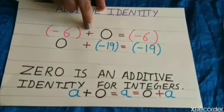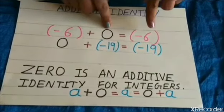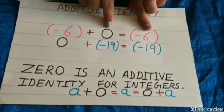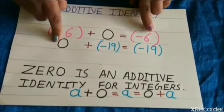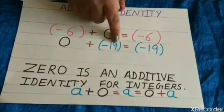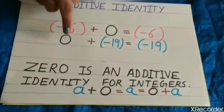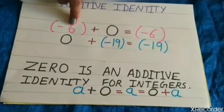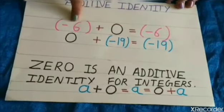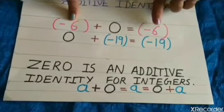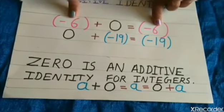Here, minus 6 plus 0. Then, we will get answer minus 6 only. Here, also 0 plus minus 19, answer is minus 19. So, when we add 0 to any integer, the answer is the same integer.